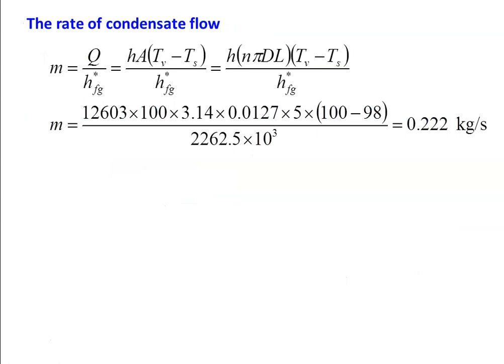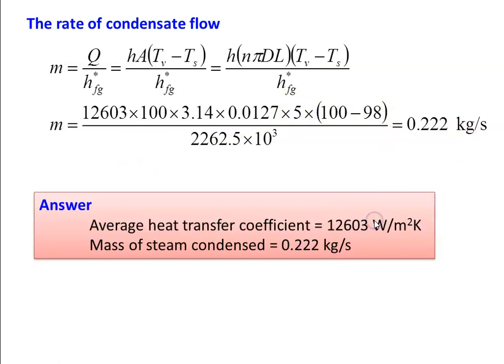The rate of condensation M = Q / HFG*, where Q = HE × (Tv − Ts) and area A = n × π × D × L (total area for all 100 tubes). Substituting: 12603 × 100 × π × 0.0127 × 5 × (100 − 98) / HFG* gives M = 0.002 kg/s. Answer: average heat transfer coefficient = 12603 W/m²·K and mass of steam condensed = 0.002 kg/s.